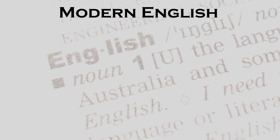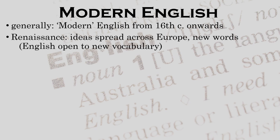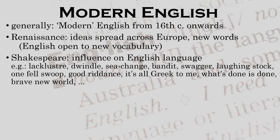We have come to the third and final stage: Modern English, generally used for English from the 16th century onwards. During the period of the Renaissance, many new ideas spread across Europe with new vocabulary to match. English had always been a language very open to new vocabulary from other languages — just think of Old English and how many French words it had incorporated. One particular man, William Shakespeare, probably had the greatest single influence on the language, contributing hundreds of words and expressions — for example: lackluster, dwindle, sea change, bandit, swagger, laughing stock.